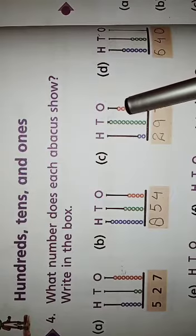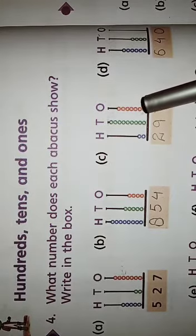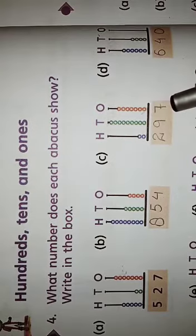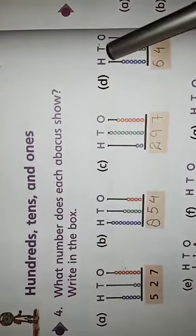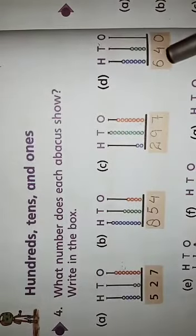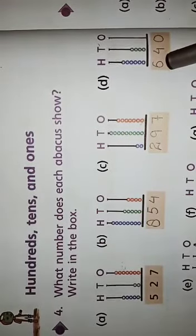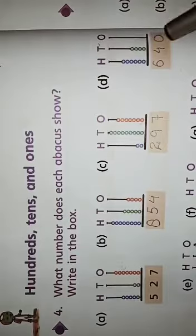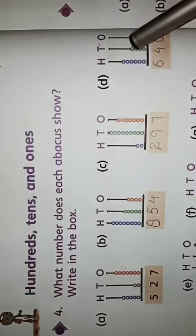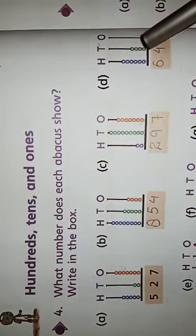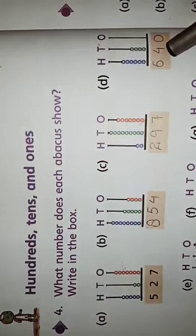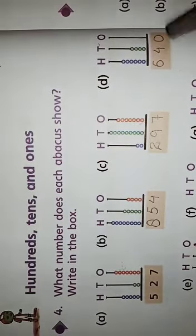In the ones column: 1, 2, 3, 4, 5, 6 and 7. So you will write 7. Question D: in the hundreds column there are 6 beads, so write 6. In the tens column there are 4 beads — 1, 2, 3 and 4 — so write 4. And in the ones column there is nothing, no beads, so you write 0.